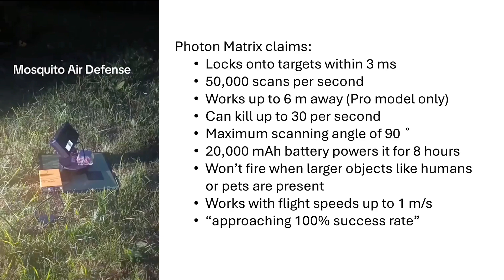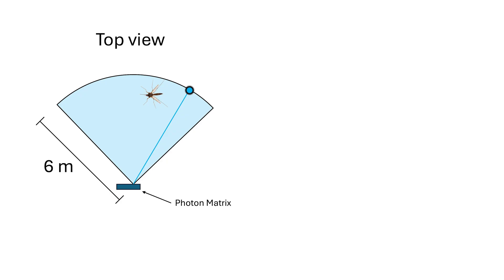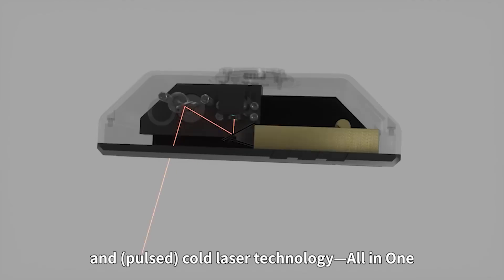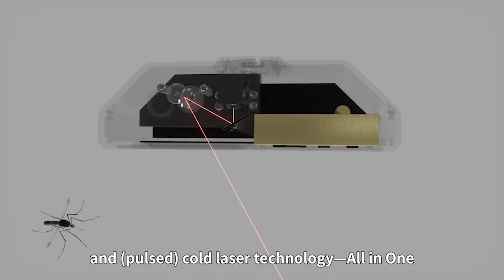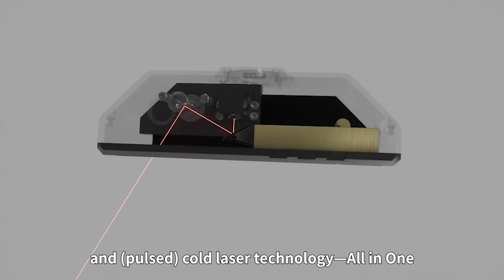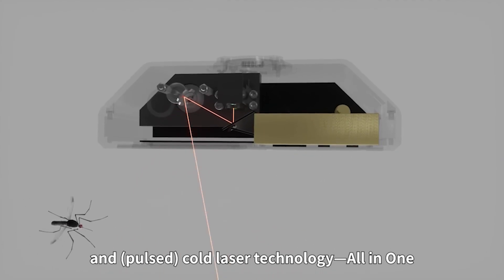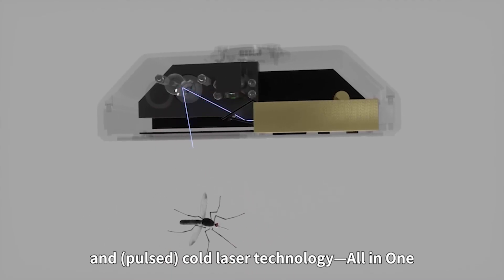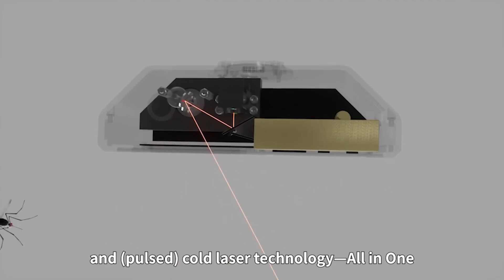So, how does the device work? Or at least, how are they proposing it will work? Here's the visualization I put together to help understand it. This is a top-down view of the device showing the 90-degree scan area with a six meter range. And here's a front view of that same plane. Basically, they claim that Photon Matrix will scan this plane really fast with a lower power laser using lidar. And then once it senses a mosquito, it locks onto it and blasts it with a high power laser to kill it. Or at least prevent it from flying. That's really all you need, right?